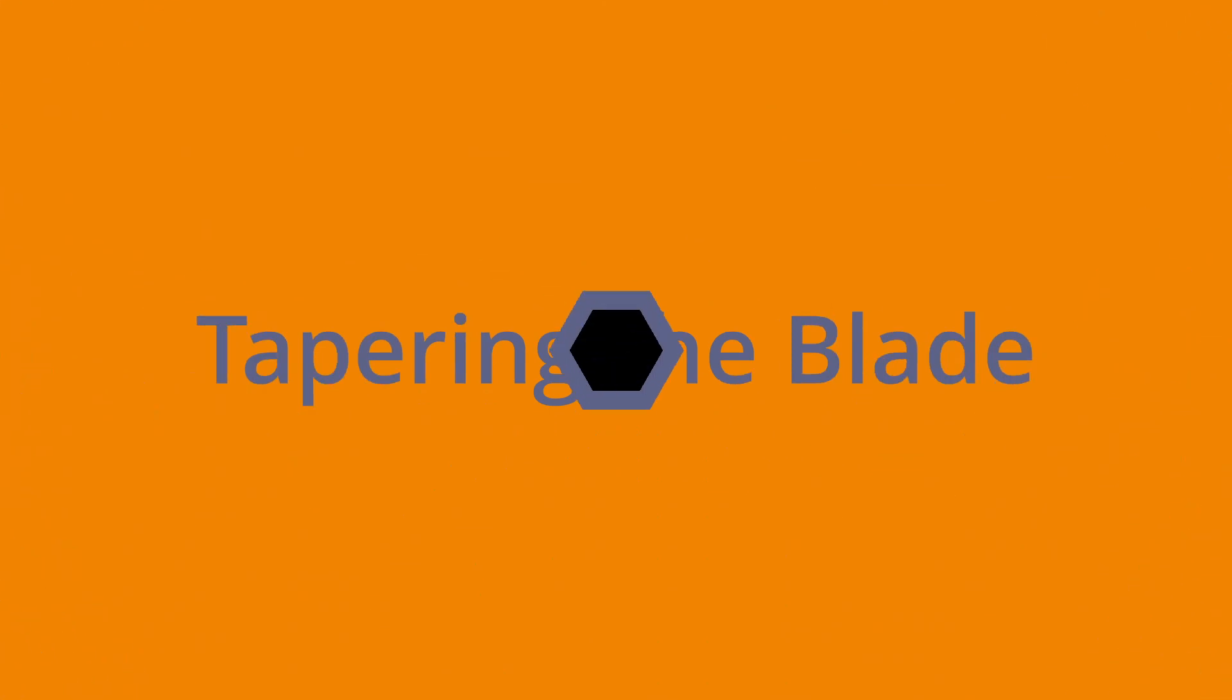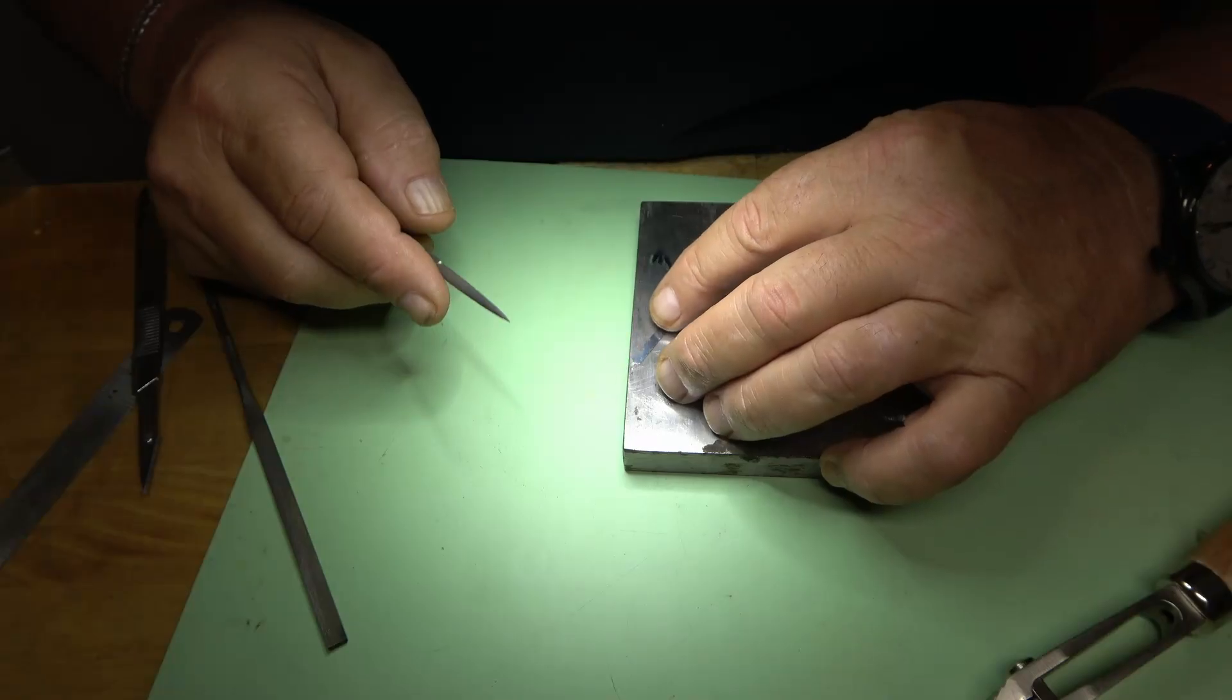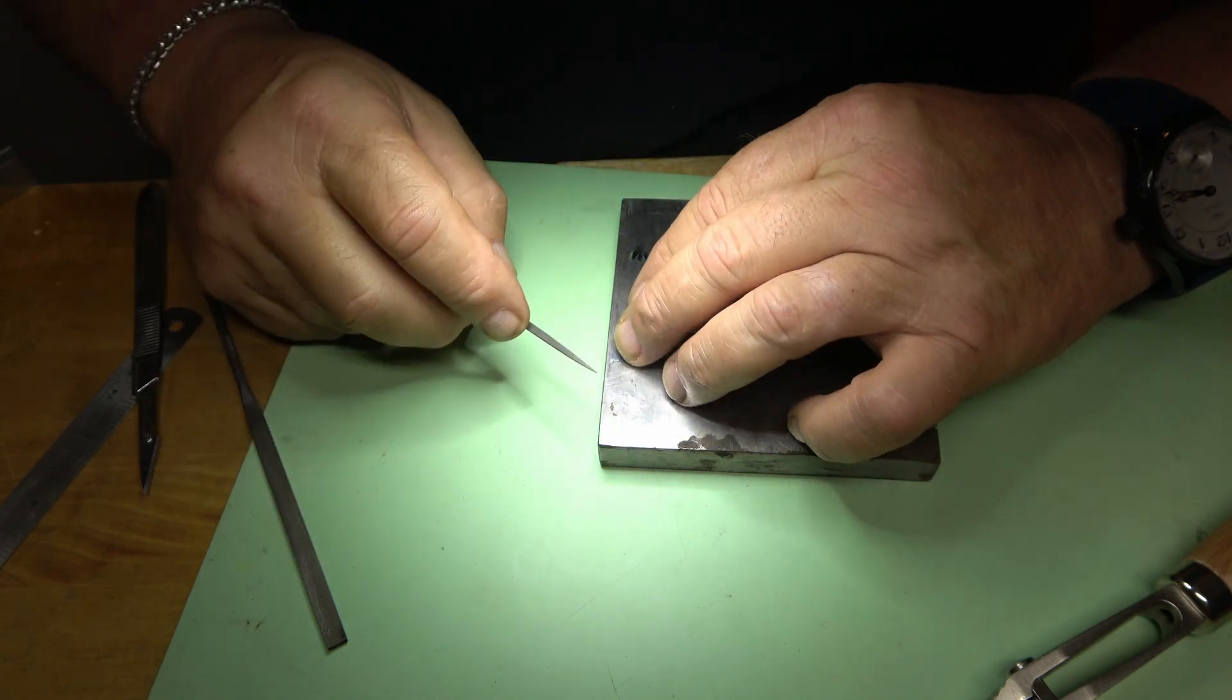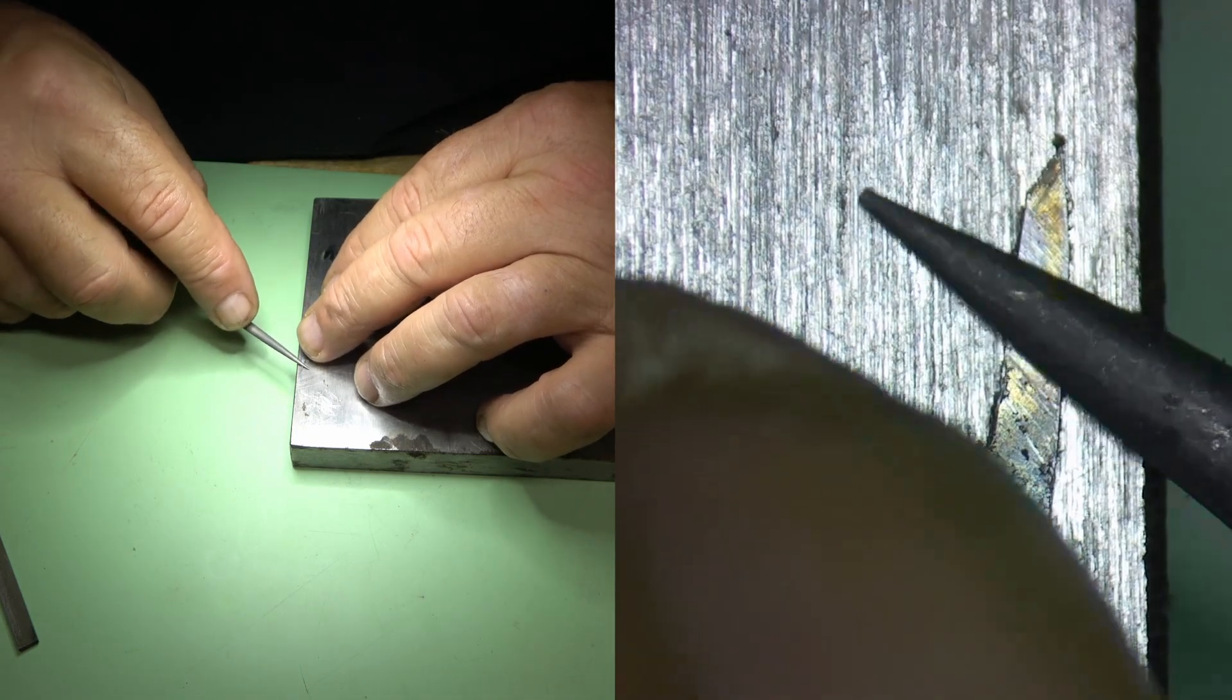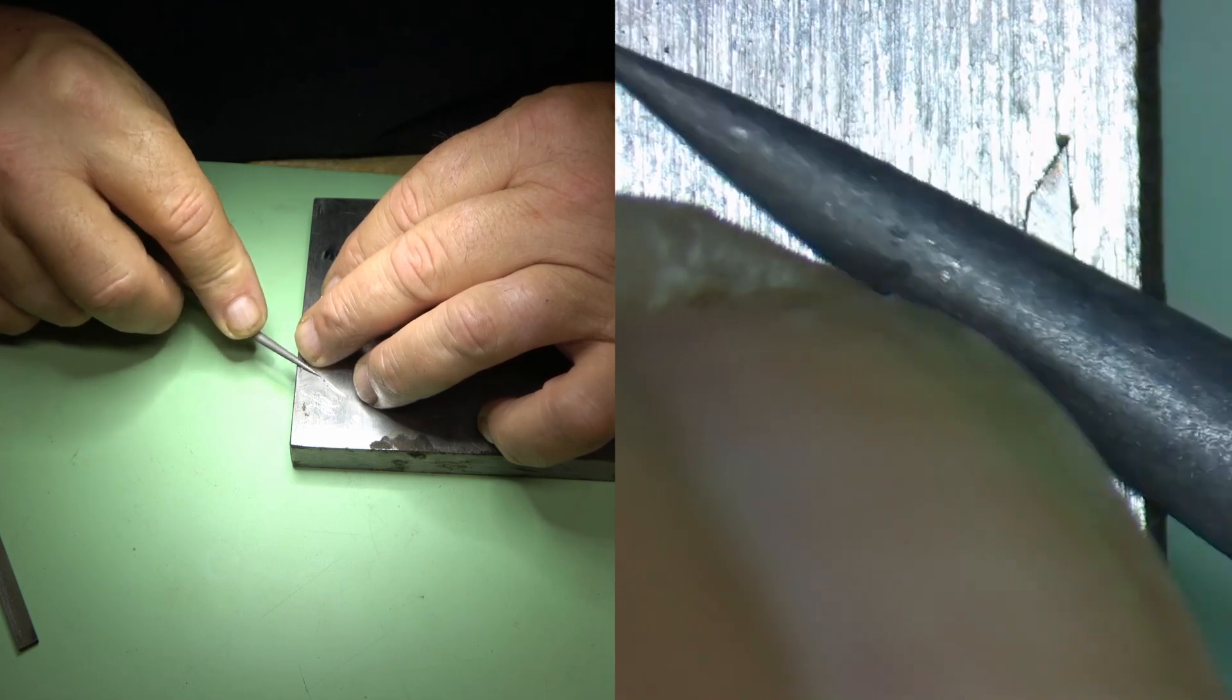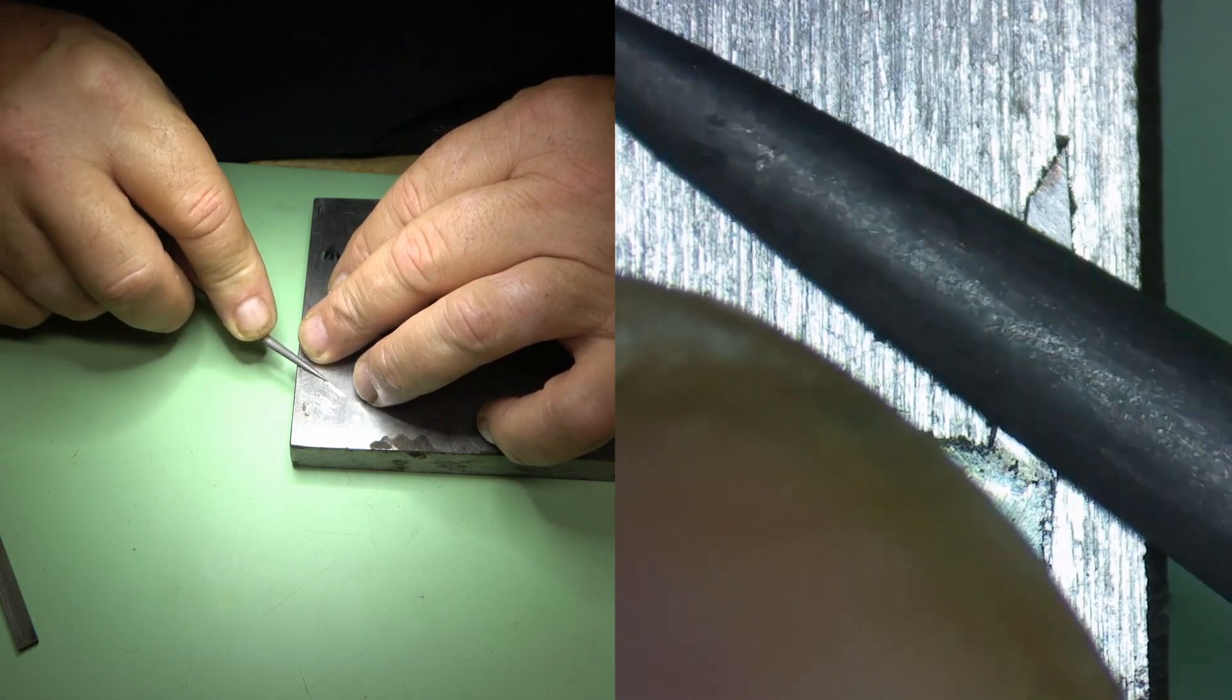Next thing we need to do is taper the blade down from its overall thickness of 2.3 millimeters down to somewhere in the hundredths of a millimeter, okay? To do this, I'm going to use escapement buffs.